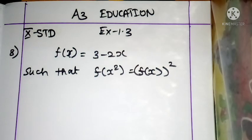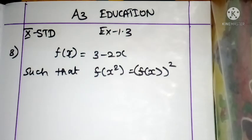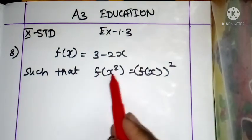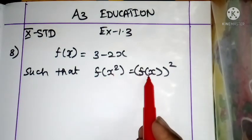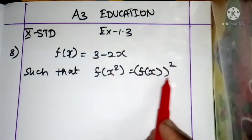Hello students, this is A3 Education, Class 10 Chapter 1 Exercise 1.3, 8th sum. The function f(x) is equal to 3 minus 2x, such that f(x²) is equal to [f(x)]² (the whole square).